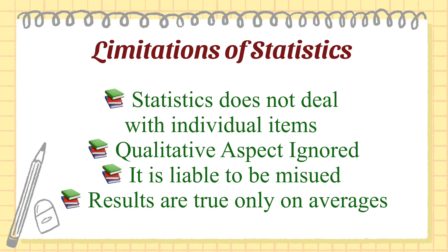Limitations of statistics. 1. Statistics deals with only an aggregate of facts or items and does not recognize any individual item. 2. Statistics is unable to study qualitative characters like honesty, punctuality, kindness, etc. Statistics can only provide information about variables that are measurable, so important variables may be overlooked leading to inaccurate conclusions. 3. Statistics can be easily manipulated to support a particular agenda. This can happen when data is collected by inexperienced, dishonest, or biased persons. This can lead to inaccurate conclusions or misinterpretations of data.